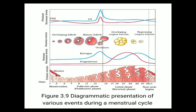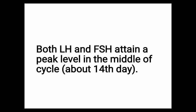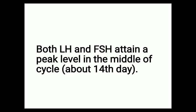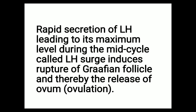Both LH and FSH attain a peak level in the middle of the cycle, around day 14. The rapid secretion of LH leading to its maximum level during the mid-cycle is called the LH surge. This several-fold increase in LH at the mid-cycle of the menstrual cycle is known as the LH surge, and this LH surge induces rupture of the Graafian follicle and thereby the release of the ovum.